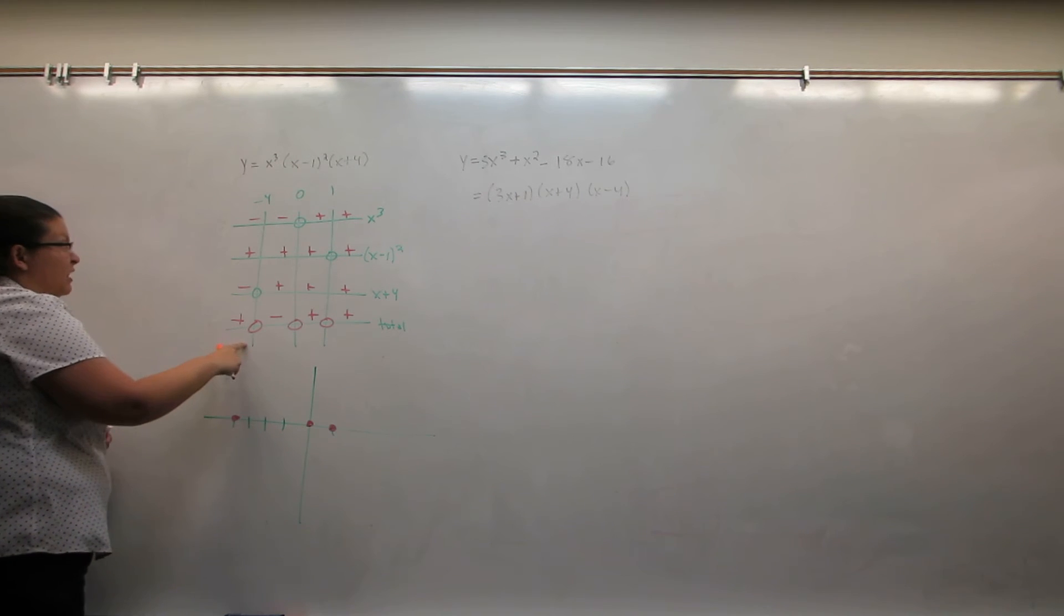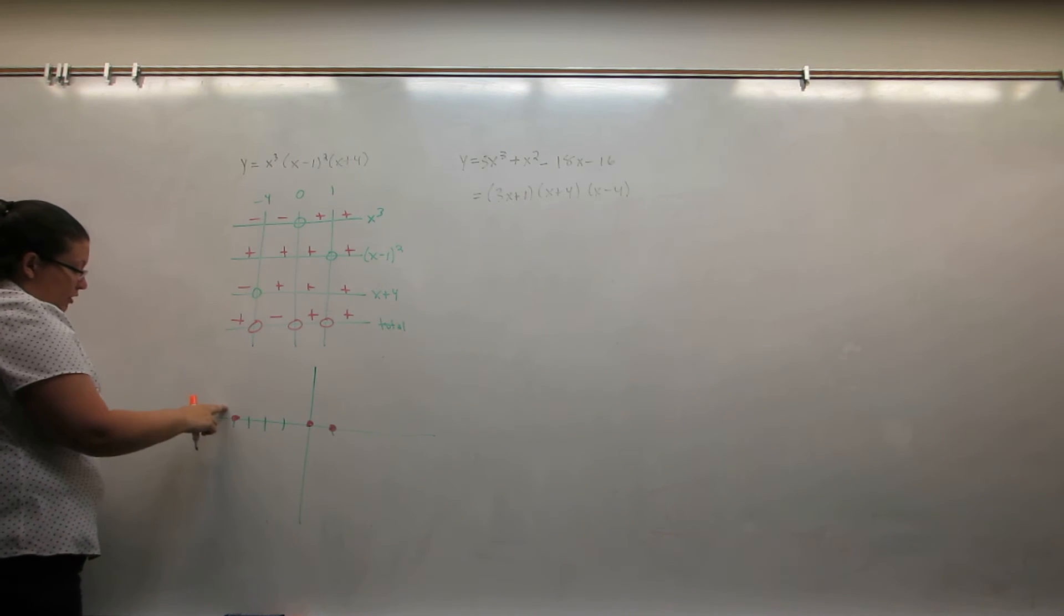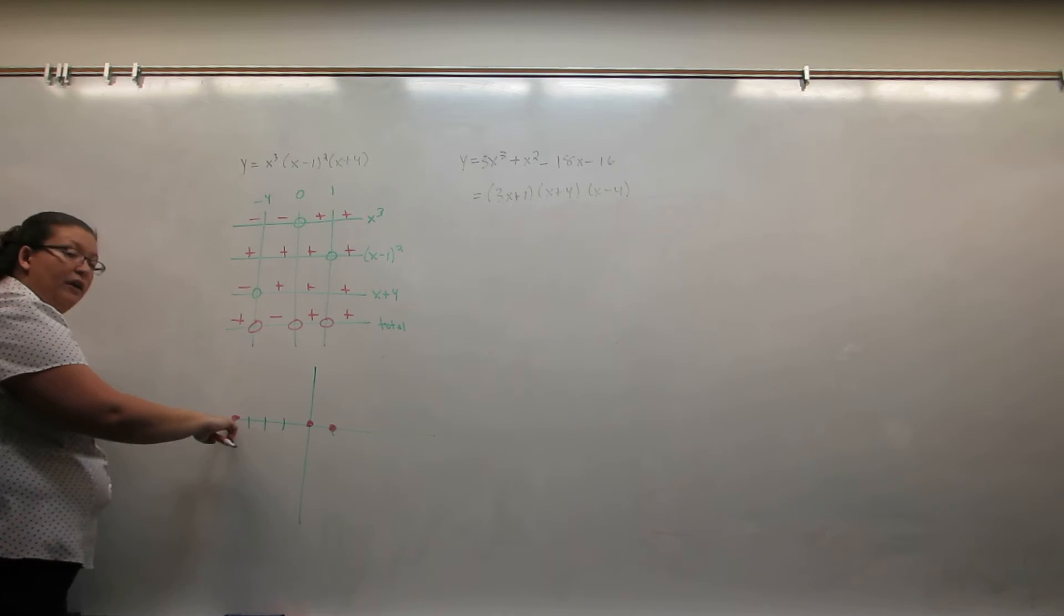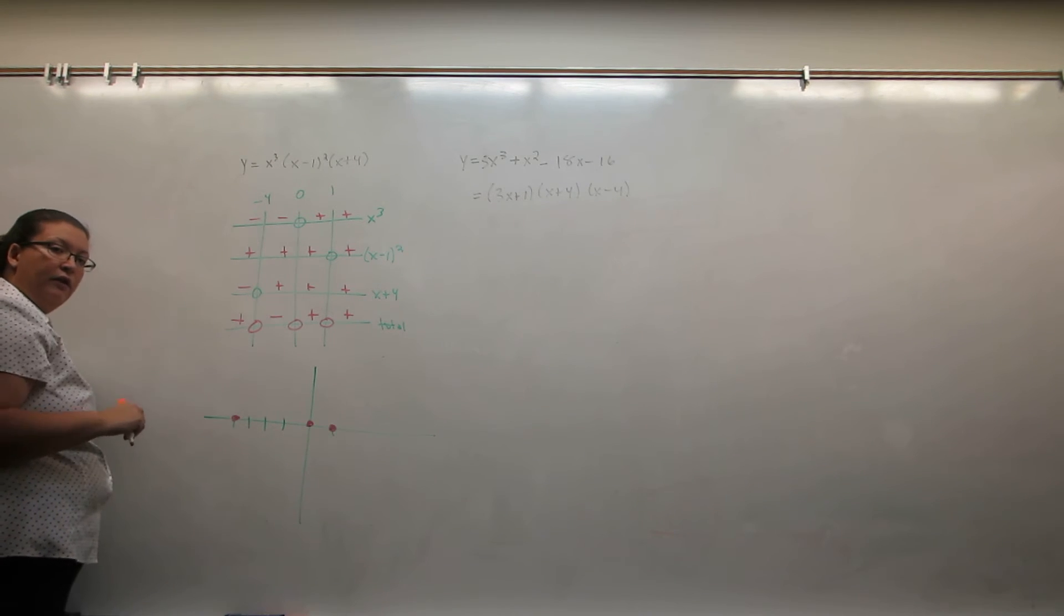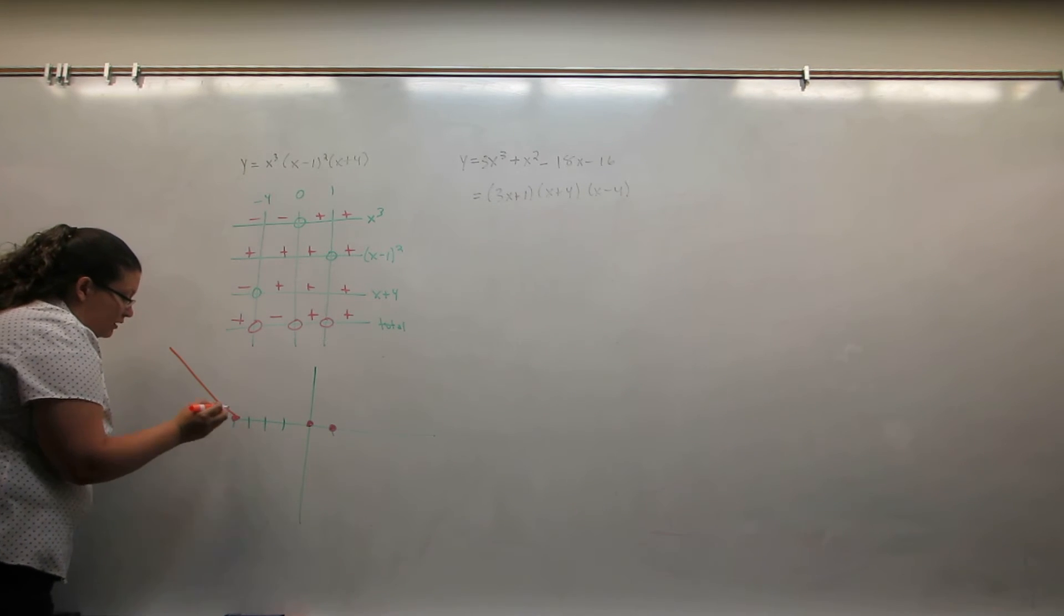The sign chart tells us that until negative four, the graph must be positive. So I know that the graph either comes down like that or up like this because it has to end there. And one of those that is always positive is this.